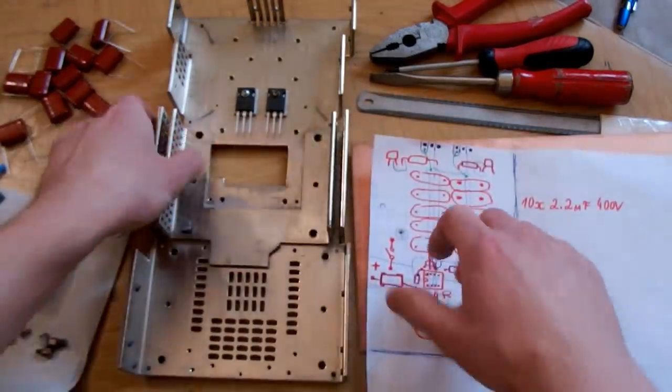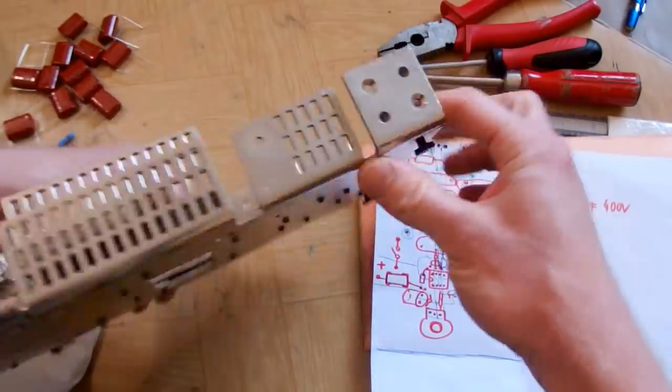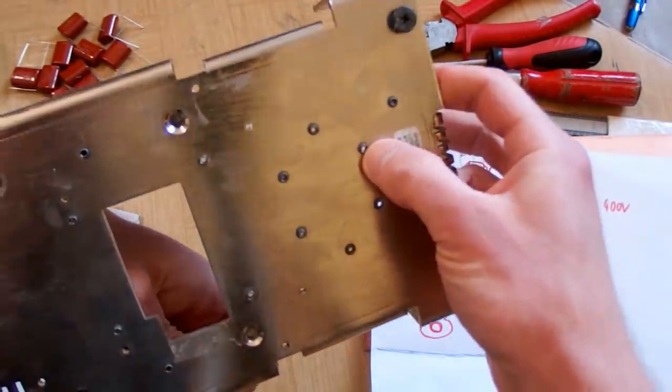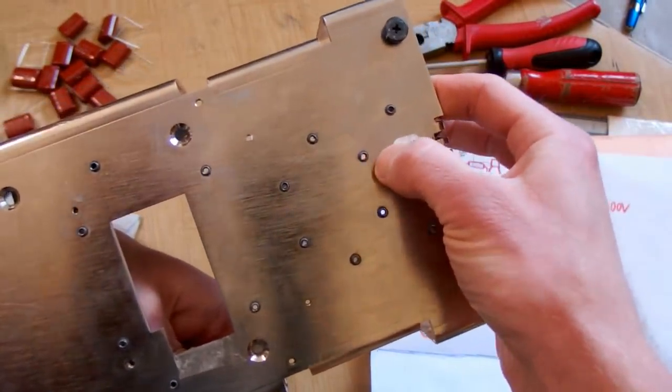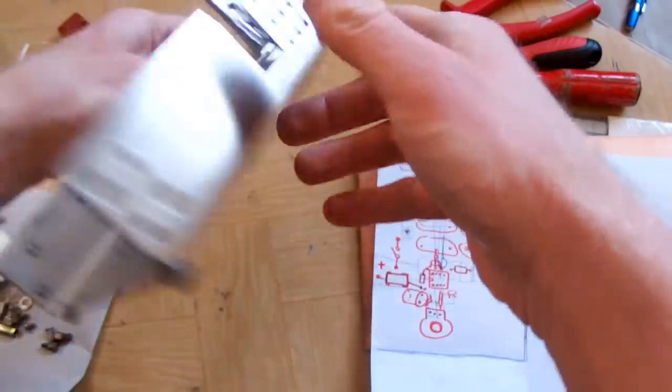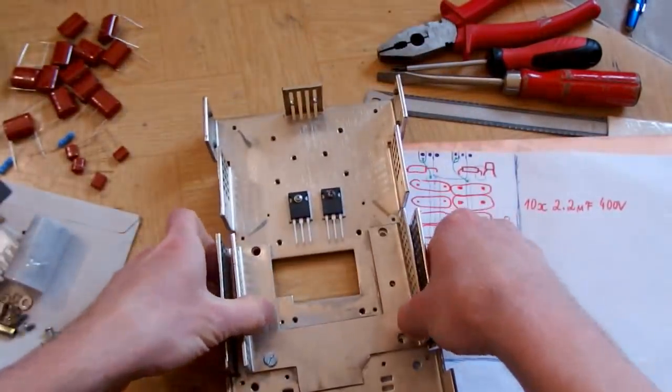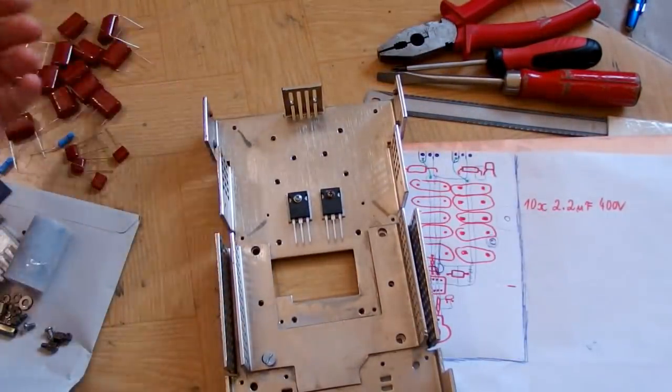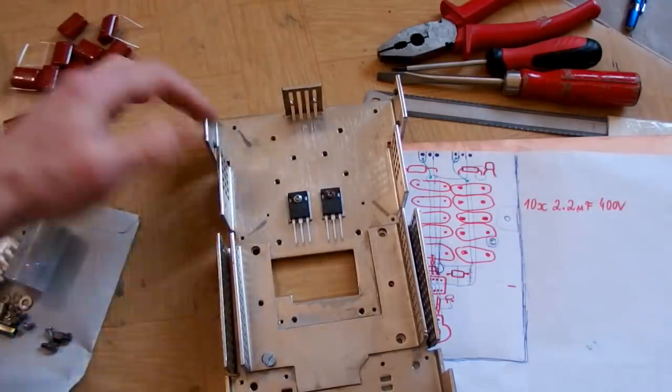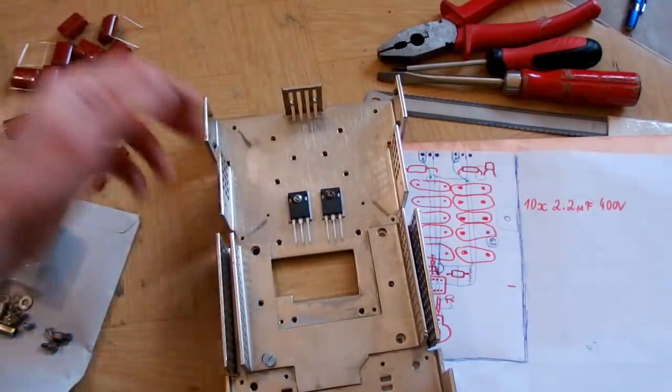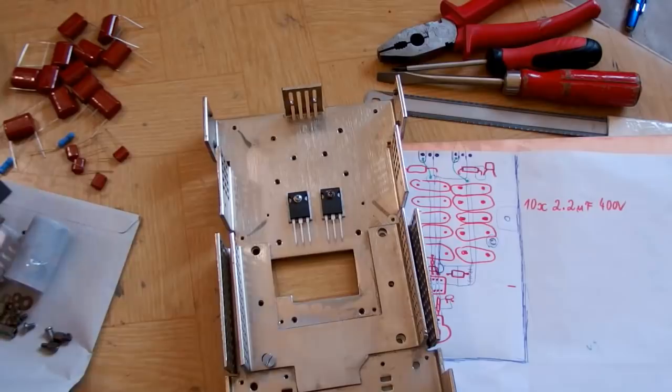And the heatsink already has some holes in it with a thread. There are actually some iron pieces inserted into it with thread, and it's quite useful to have more holes. I can add transistors for a bridge or for parallel pairs, or I can add diodes if I ever use transistors with no built-in diodes.